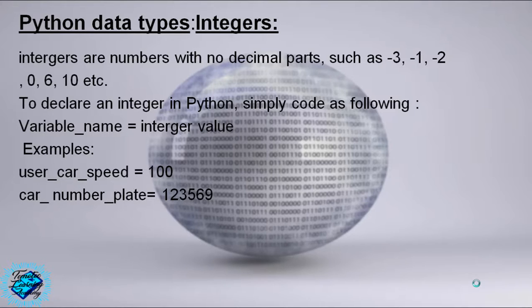Examples: user_car_speed = 100, car_number_plate = 123569.